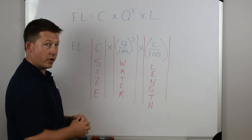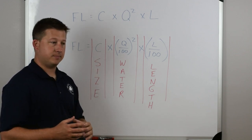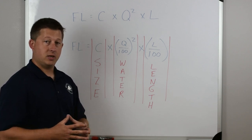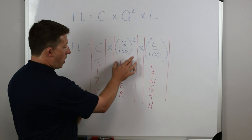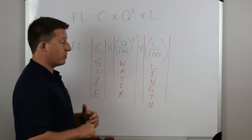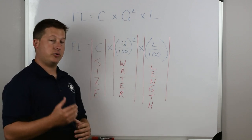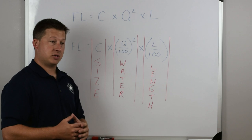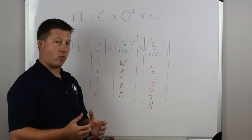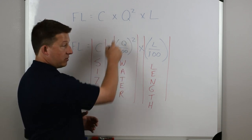Those three components are the size of the hose, which gives you your coefficient — usually found on a chart — though some manufacturers have their own coefficients. The next part is the water, which is Q, or quantity of water. Something that confuses people is that Q squared is actually in hundreds of gallons per minute. So instead of using the total GPM, you have to divide it by 100. We often rewrite the formula as Q divided by 100, all squared.